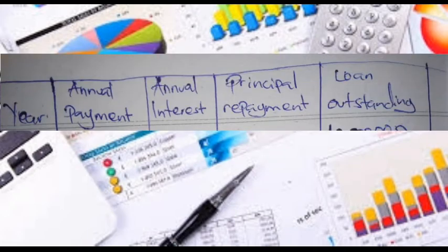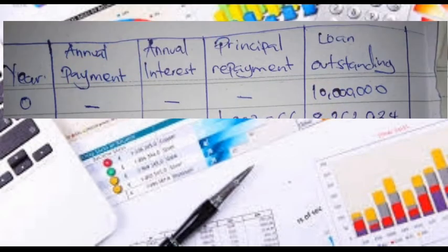After finding the equal installment, we draw a loan amortization schedule as required in the question. The schedule has five columns: years, annual payment, annual interest, principal repayment, and loan outstanding. We start with year zero. At year zero there is no annual payment, no interest, and no principal repayment, but it is when we received the loan, so the loan outstanding is 10 million.